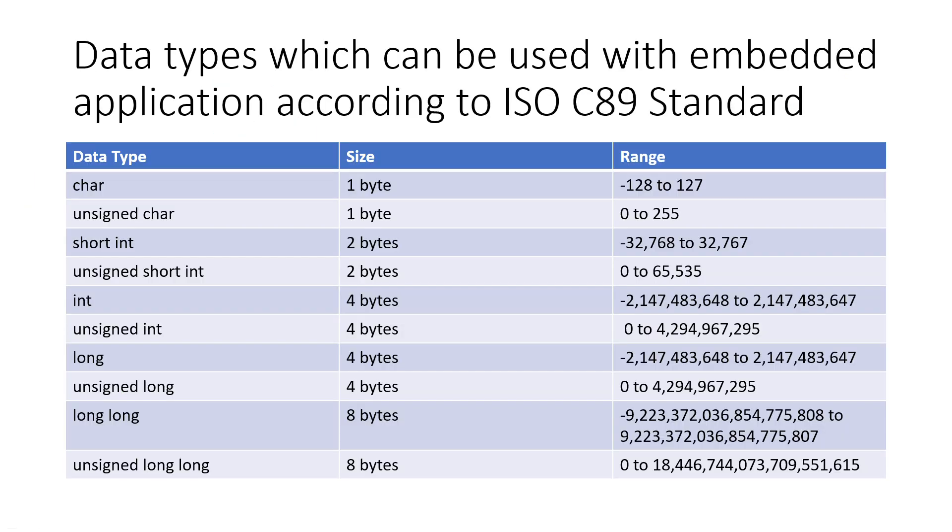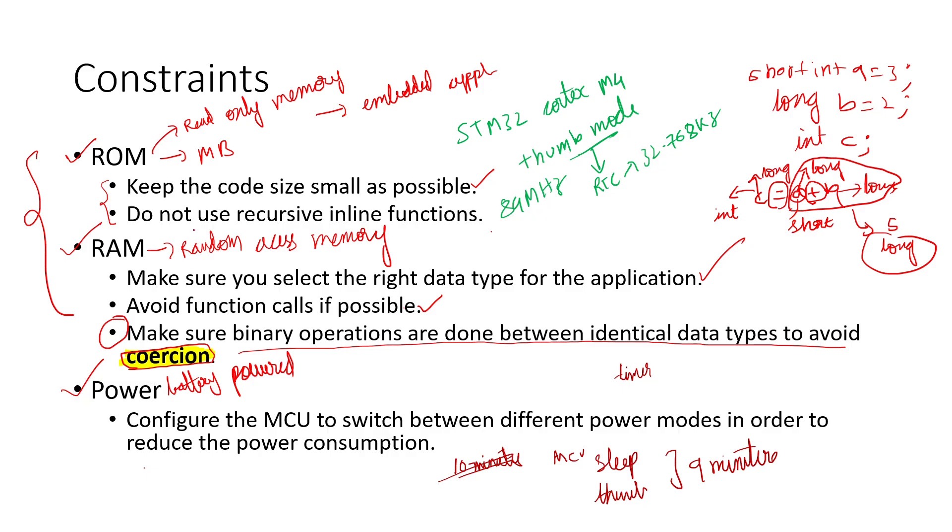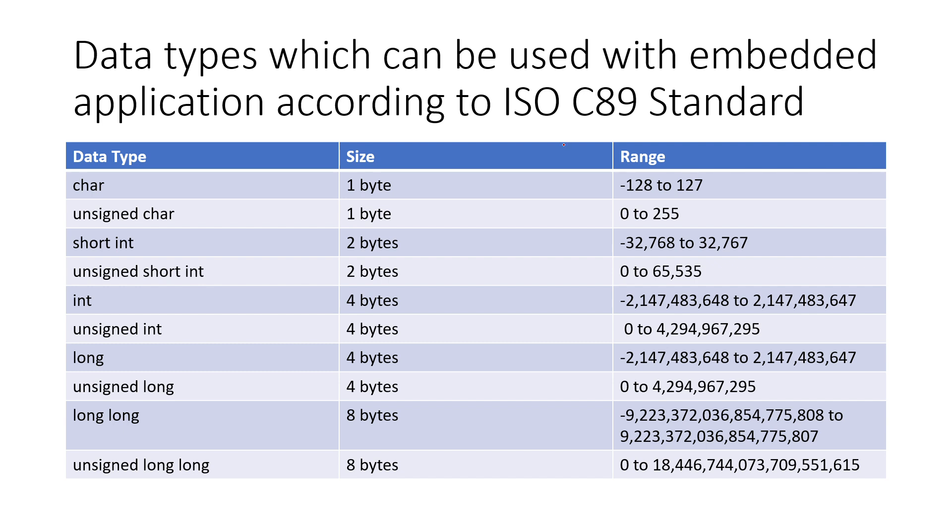Coming to the next part - I've said make sure you select the right data type. Now we'll focus on what different data types are available, how to choose them. There are two things: ISO C89 and ISO C99 standard.